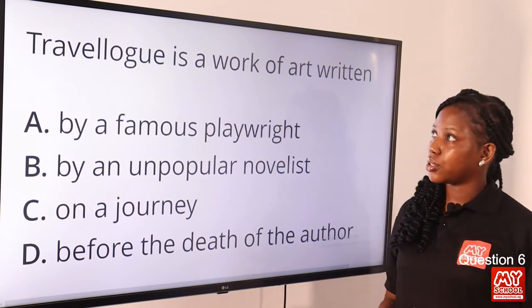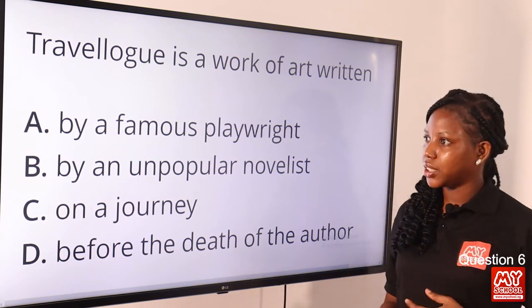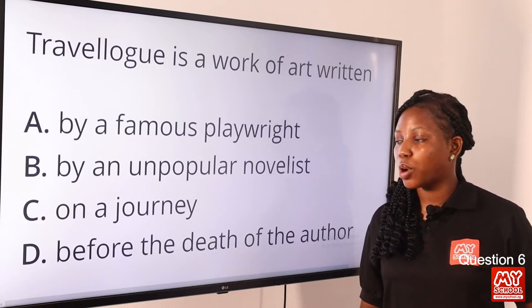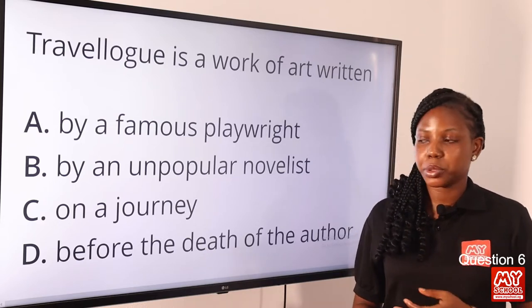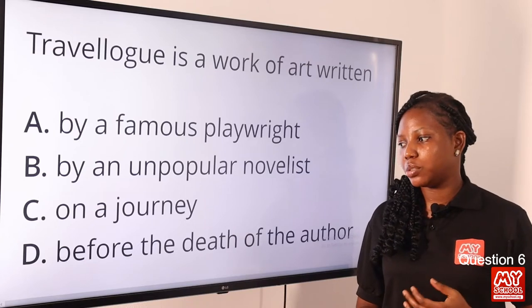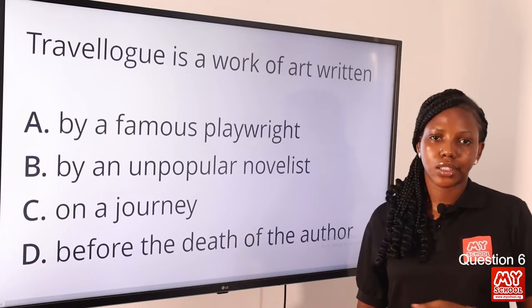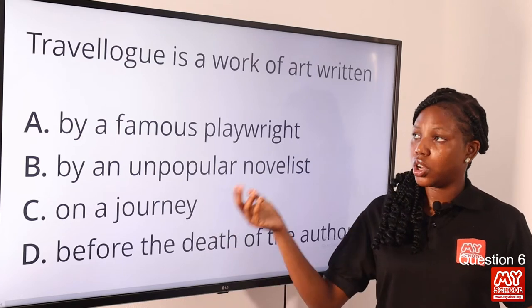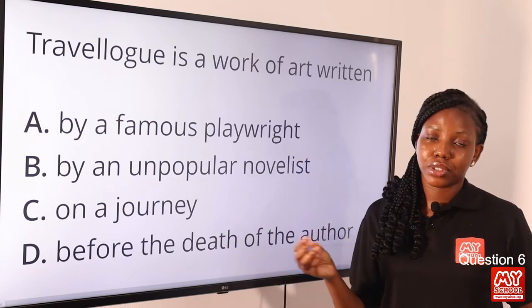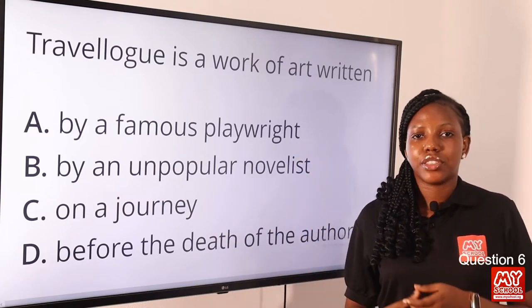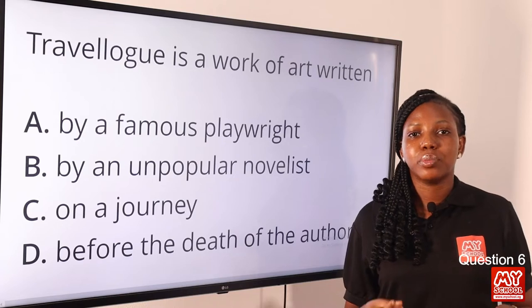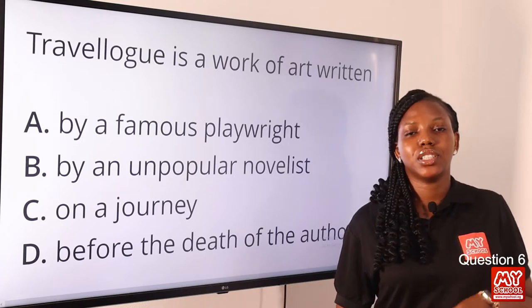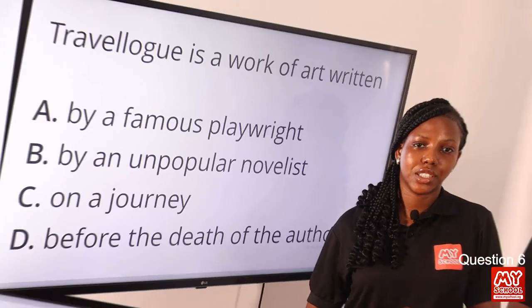Question 6. A travelogue is a work of art written dash. Option A: by a famous playwright. Option B: by an unpopular novelist. Option C: on a journey. Option D: before the death of the author. The answer is on a journey. A travelogue is a work of art written on a journey, and it teaches us about the places visited and experienced by a traveler. So the answer is option C, on a journey.